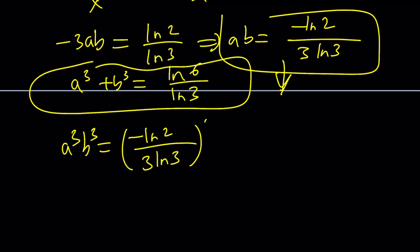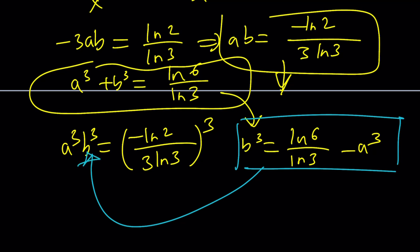That's ab. And then the constant term should equal the constant term, which is ln 6 over ln 3. So a cubed plus b cubed should equal ln 6 over ln 3. We kind of got a system of equations, but one of them is cubic.